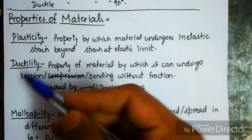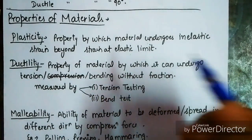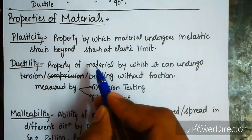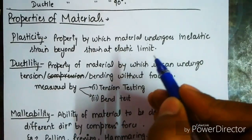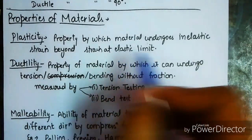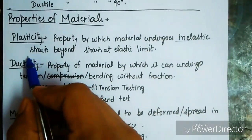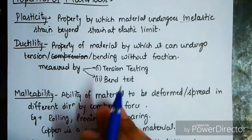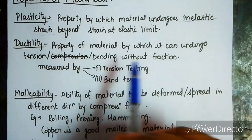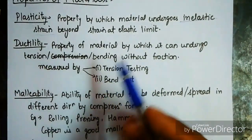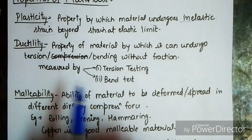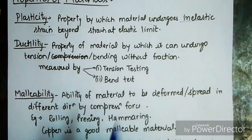Plasticity is the property by which a material undergoes inelastic strain beyond the strain at elastic limit — the elastic property is lost. Ductility is the property by which a material can undergo tension or bending without fracture; the material can be drawn into wires. Ductility is measured by tension testing and bend test.